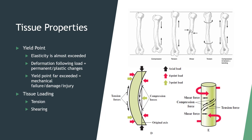Body tissues are viscoelastic and contain both viscous and elastic properties. There is a yield point, which is the point at which elasticity is almost exceeded. If deformation persists following the release of the load, permanent or plastic changes result. When the yield point is far exceeded, mechanical failure occurs, resulting in damage to the tissue.